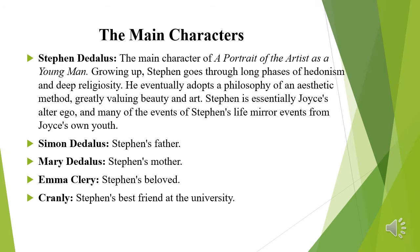Now we come to the main characters. The protagonist is Stephen Daedalus, the main character of the novel. Growing up, Stephen goes through long phases of hedonism and deep religiosity, eventually adopting a philosophy of an aesthetic method, greatly valuing beauty and art. Stephen is essentially Joyce's alter ego, and many events of Stephen's life mirror events from Joyce's own youth. We also have Simon Daedalus, Stephen's father; Mary Daedalus, his mother; Emma Cleary, his beloved; and Cranly, his best friend at university.